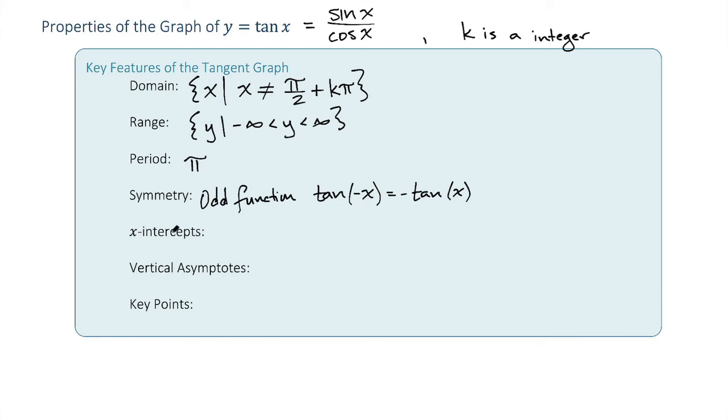The x-intercepts of tangent, those are when the sine of x is equal to 0. And that happens at multiples of pi. So that's going to be at the coordinates k times pi, where k is an integer, comma 0.